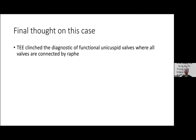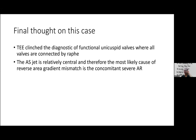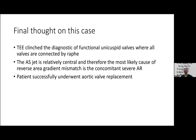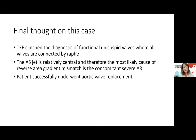Final thoughts on case five: TEE diagnosis is functional unicuspid aortic valve with a relatively central stenotic jet — therefore the most likely cause of reverse area-gradient mismatch is concomitant severe aortic regurgitation. The patient successfully underwent aortic valve replacement. Without TEE, one might have confidently diagnosed tricuspid valve disease or chronic rheumatic heart disease — though the final management would be the same.